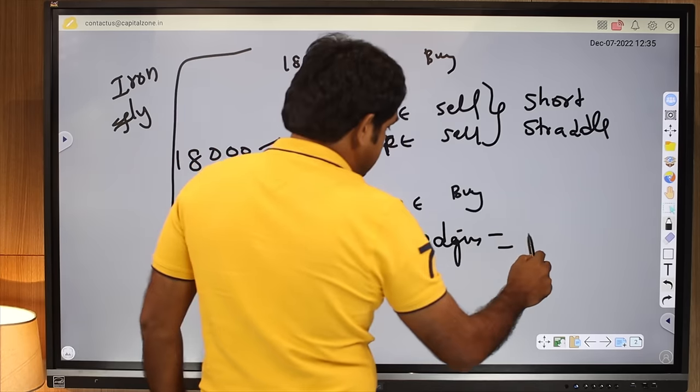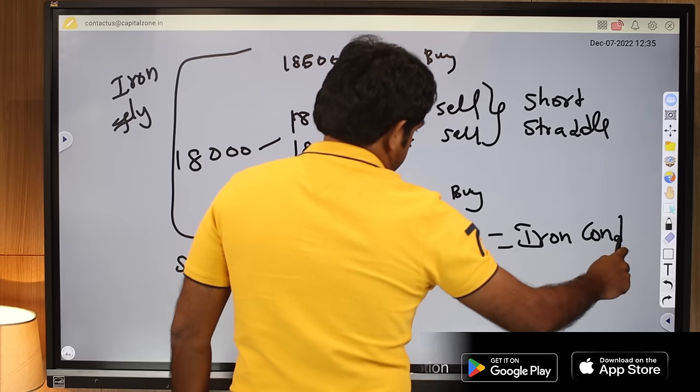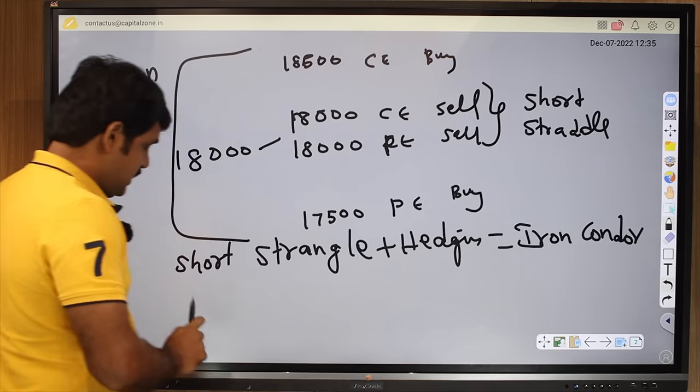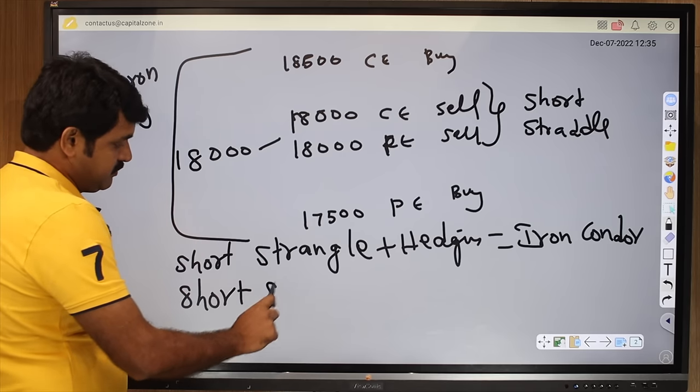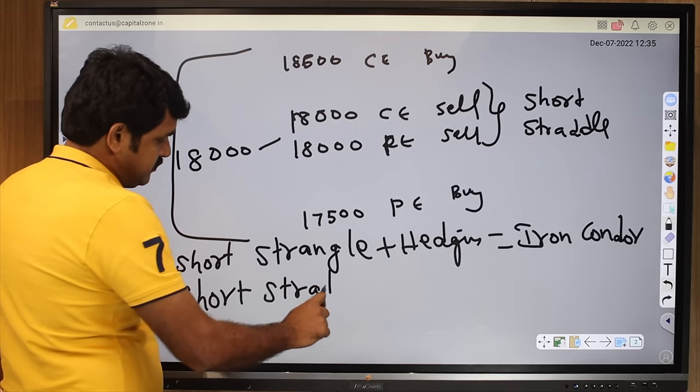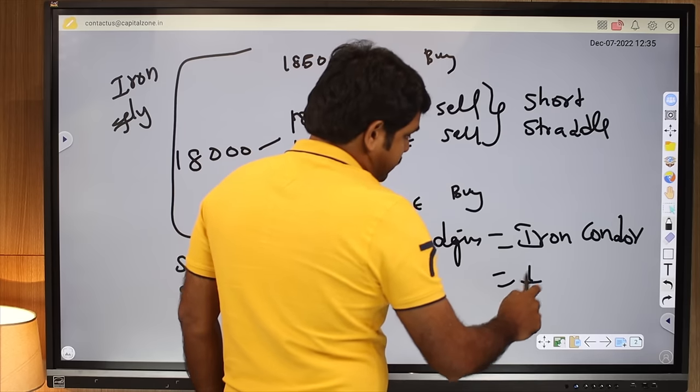This is OTM. OTM plus hedging is said to be iron condor. If you have a short straddle ATM and if you do hedging, it's said to be iron fly.